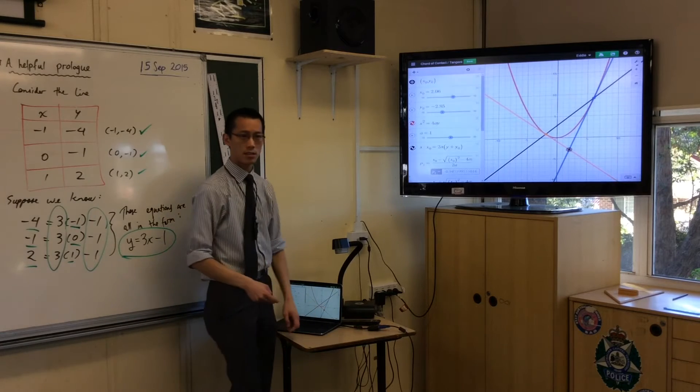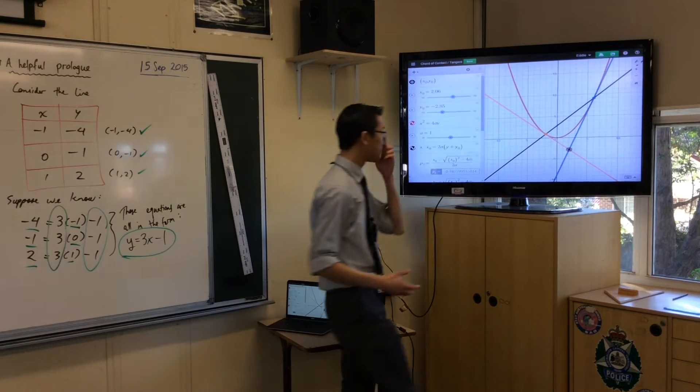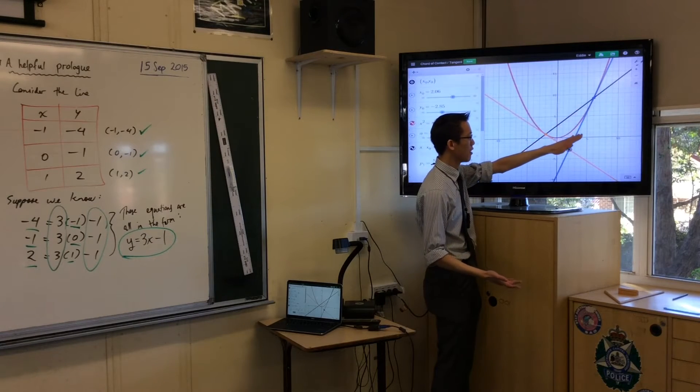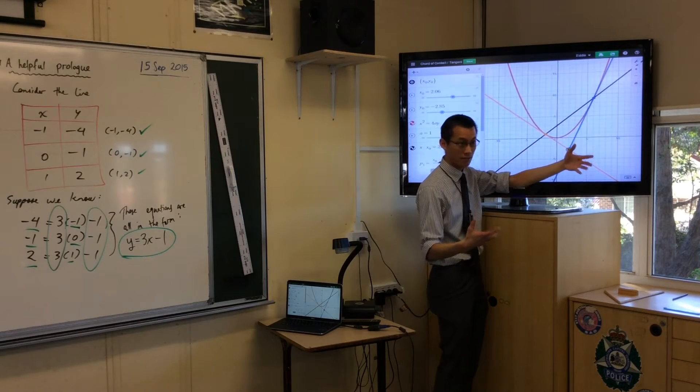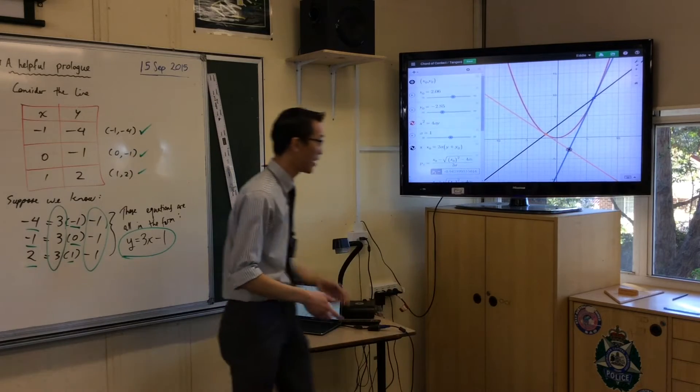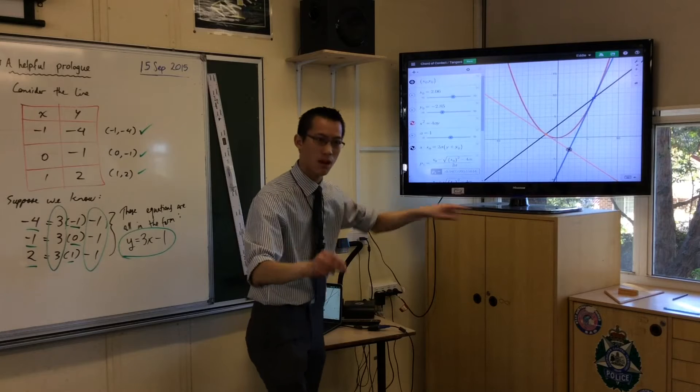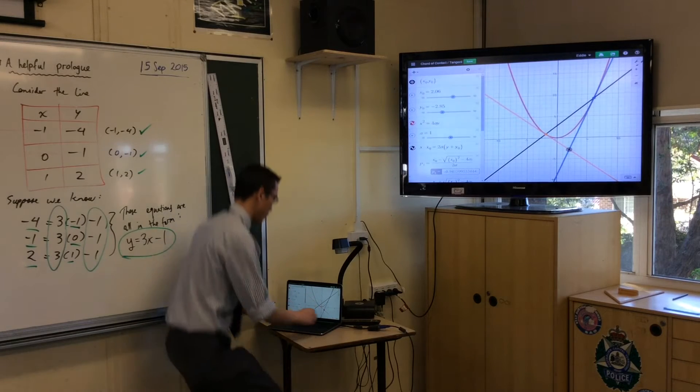Now what we're saying is, the chord of contact, this guy, and the equation of the tangent are really the same thing. Let me show you how much they're the same thing. If I take my external point, x naught, y naught, and I turn it into a point on the parabola, like so.